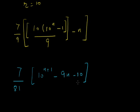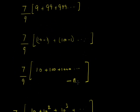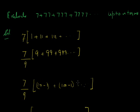Hence the result is 7/81 times (10^(N+1) − 9N − 10). This is the answer.